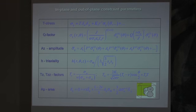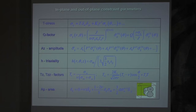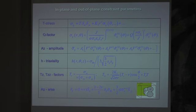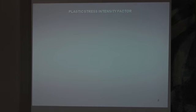All these constraint parameters may be used only as additional parameters to main fracture resistance parameters, in the frame of two-parameter approaches — for instance, J-integral and T-stress and so on. This study may give some answer to the question which was formulated yesterday by Professor Neil James: what new parameters can be used in fracture mechanics? One of them from our point of view is the plastic stress intensity factor.